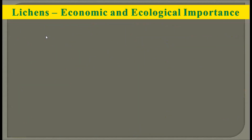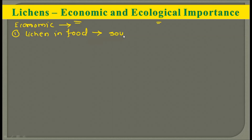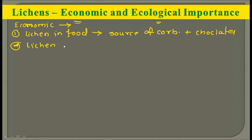Now, the economic and ecological importance of lichens — this is very important as individual questions can be asked in the UPSC examination. Economic means from the human point of view, and ecological means from the nature point of view. First, lichens can be used as food because many lichens are sources of carbohydrates and can be used in the preparation of chocolates. Second, lichens can be used as fodder for reindeers and cattle.